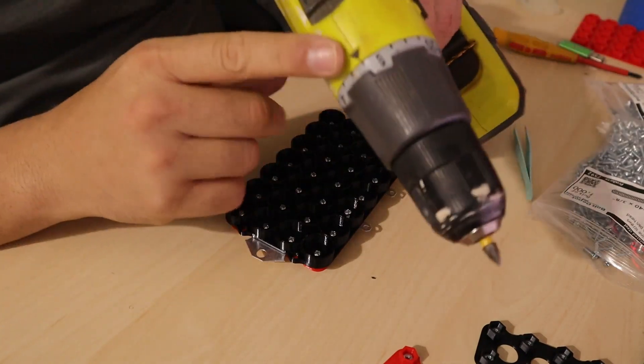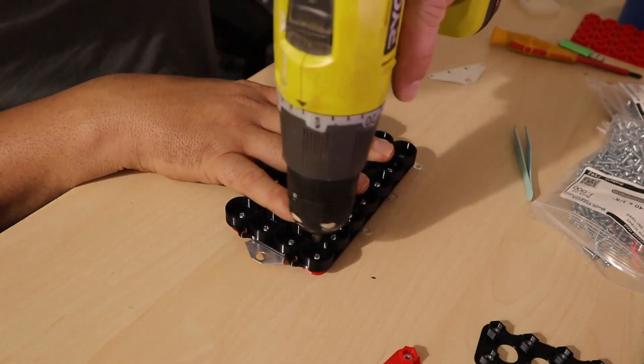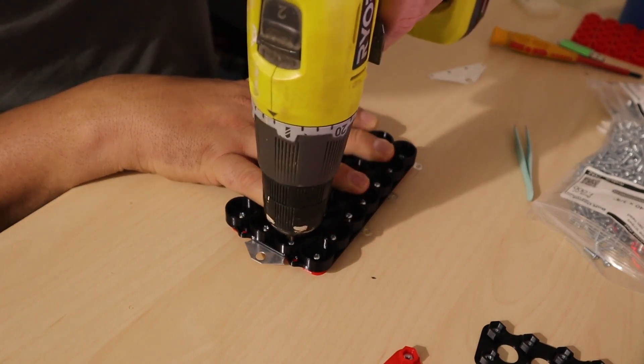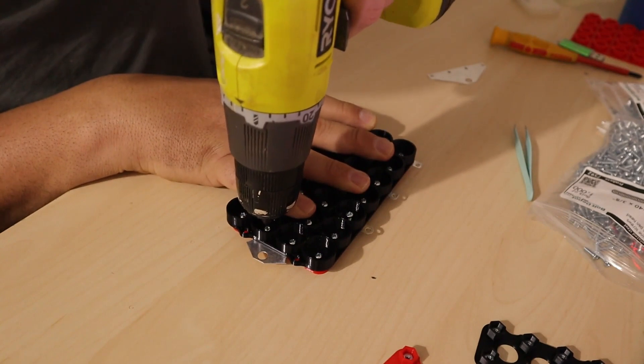Once you're done placing every single screw on the spacer, you can take a power tool like this one to do the final adjustment. Just make sure it is on the weakest setting or you are going to risk breaking the spacer.